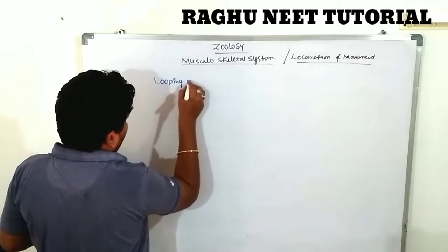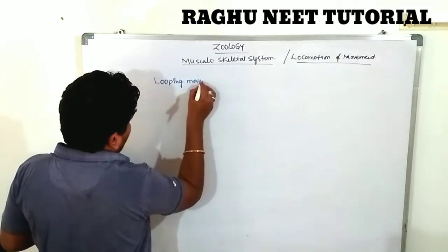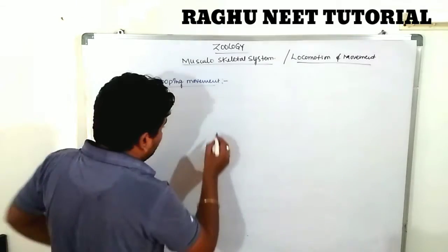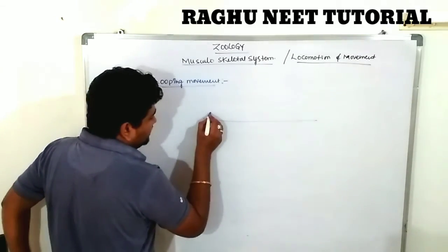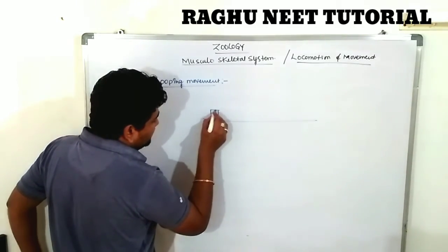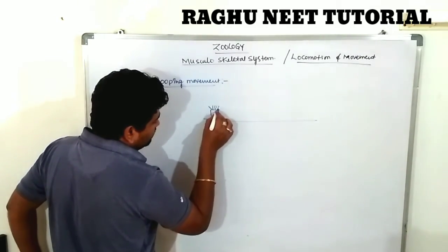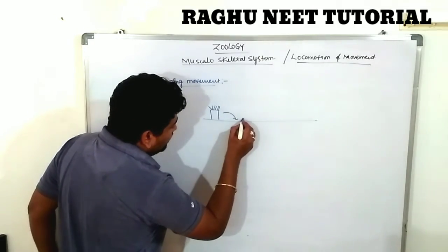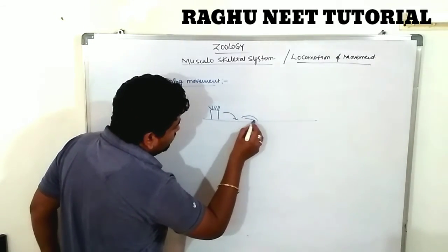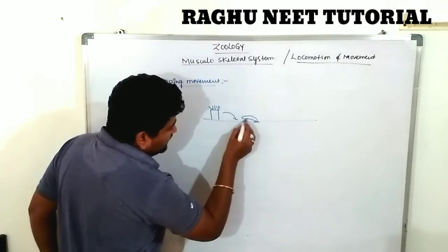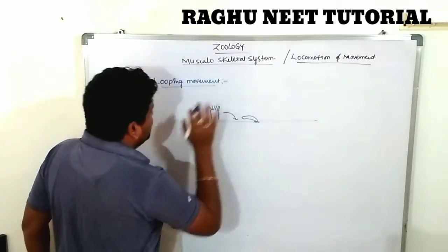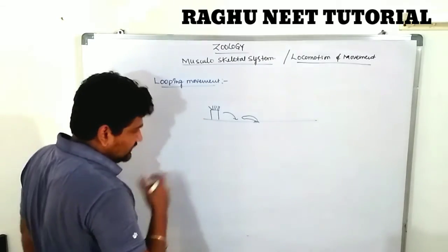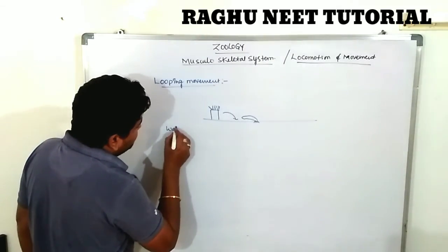Looping movement: the hydra attaches to the substratum and bends into a loop shape. The posterior region becomes free. That type of movement is called looping movement.